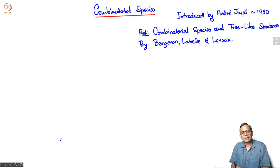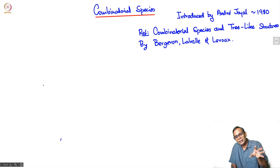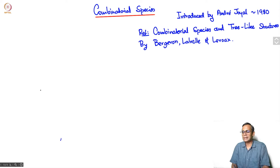We associated to each finite set U the collection of all permutations on U, that is all bijective functions from U to U. And we saw that if we have a bijection from U to V, then it is possible to take a permutation of U and turn it into a permutation of V. This is basically the idea behind the definition of a combinatorial species.